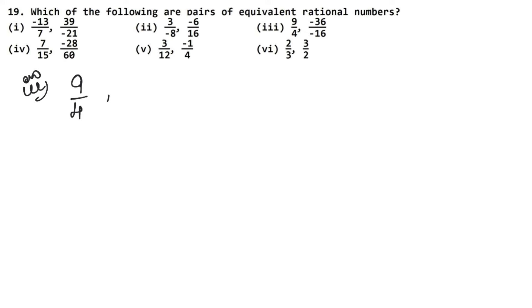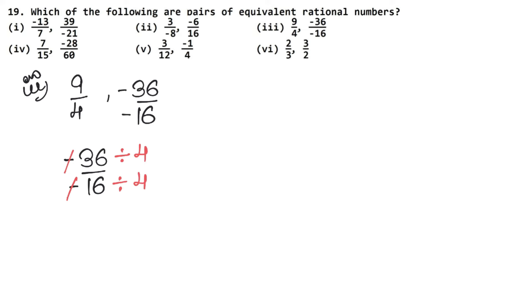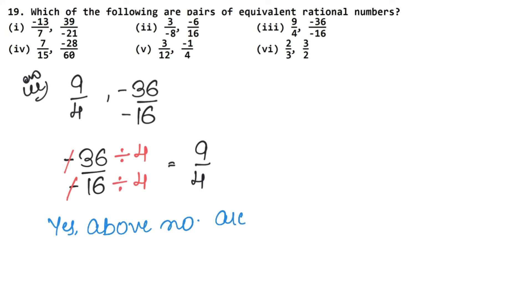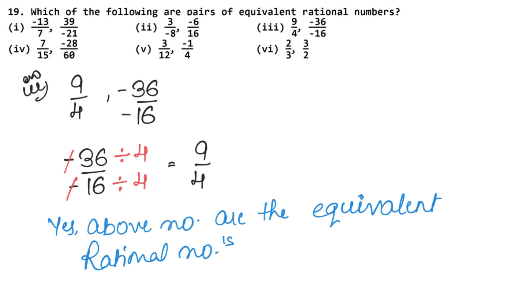Let's do the third part now. The third part is: 9 upon 4 and minus 36 upon minus 16. For minus 36 upon minus 16, both numerator and denominator are negative, so we divide both by 4: 36 divided by 4 is 9, and 16 divided by 4 is 4, giving 9 upon 4. These above numbers are equivalent rational numbers.